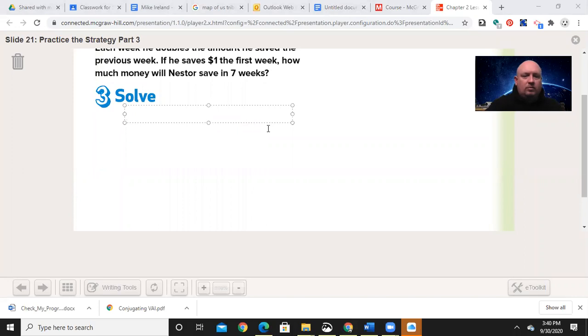So in week one, he had $1. In week two, he had $2. Week three, he had $4. Week four, he had $8. Week five, he had $16. Week six, $32. Week seven, $64.